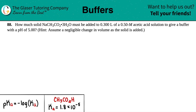Number 88. How much solid NaCH₃CO₂·3H₂O must be added to 0.300 liters of a 0.50 molarity acetic acid solution to give a buffer with a pH of 5.00? Hint: assume a negligible change in volume as the solid is added.